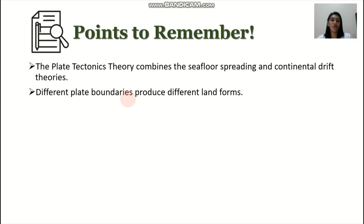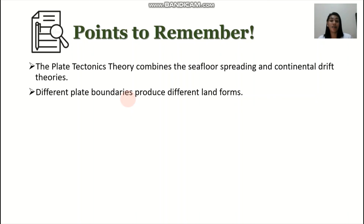Some points to remember from this video: first, the plate tectonics theory combines seafloor spreading and the continental drift theory. For seafloor spreading, it is highlighted that the oceanic crust moves. For the continental drift theory, there are different evidences that support it. The different plate boundaries produce different landforms. The three types are: convergent — two plates colliding, forming volcanoes, mountain ranges, and trenches; divergent — two plates moving apart, forming valleys and mid-oceanic ridges; and transform boundaries, which form fault lines. This video is an overview that supplements your modules.